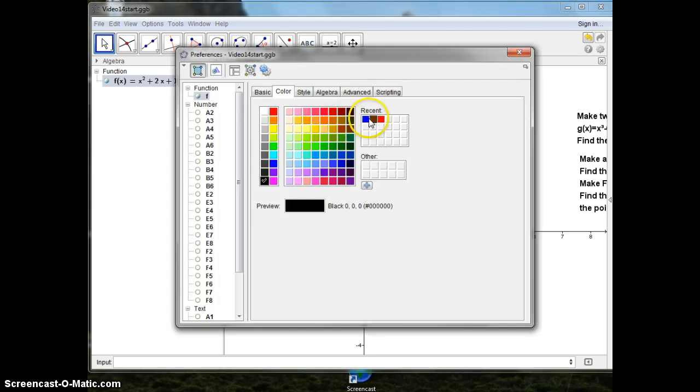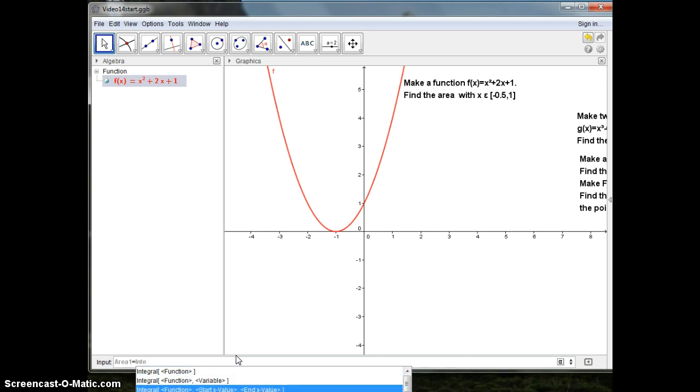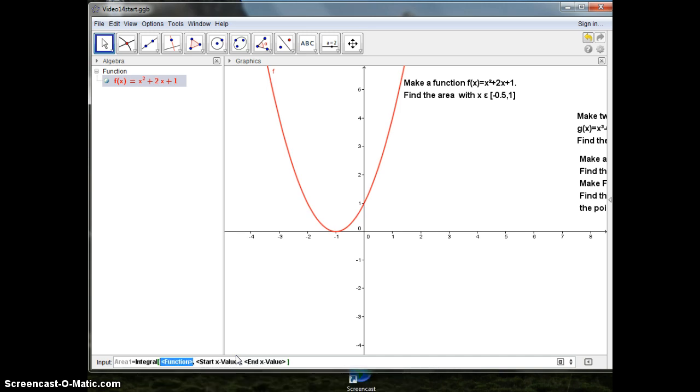First I'll just make this one red, so we can recognize it. Then I'll call it area 1, equal to integral of the function f starting value minus 0.5 up to 1. And here the area is computed.